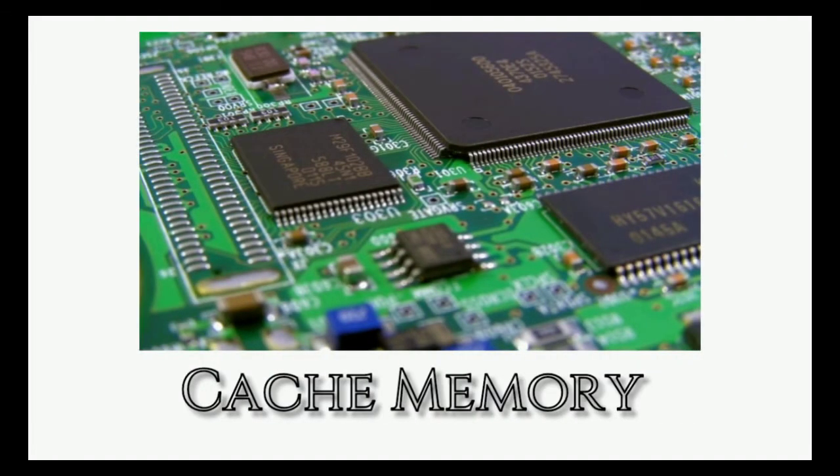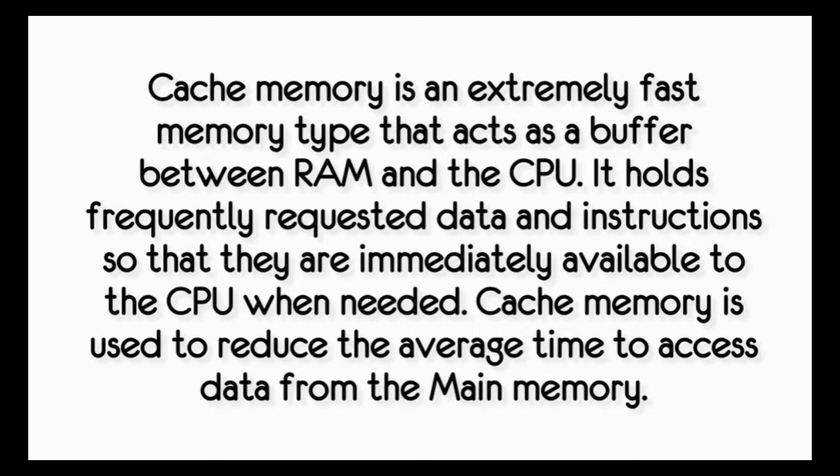Cache memory is an extremely fast memory type that acts as a buffer between RAM and the CPU. It holds frequently requested data and instructions so that they are immediately available to the CPU when needed. Cache memory is used to reduce the average time to access data from the main memory.